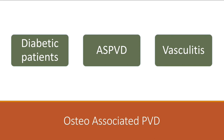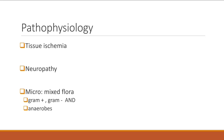Diabetic foot and peripheral vascular disease are totally different from trauma-related osteomyelitis. When you examine a foot in these patients, you need to know two things: the blood supply and the neurological status. For hand infections, you need to know if the patient is right- or left-handed and what they do for a living. For diabetic and vascular patients, check pulses, lymphedema, and neurological status starting with proprioception and sensory testing.